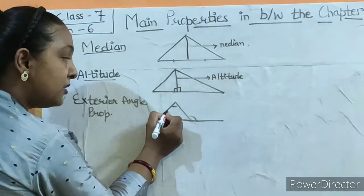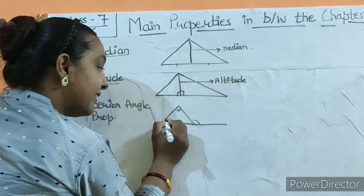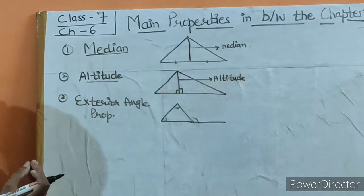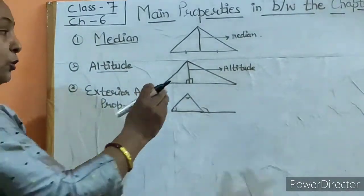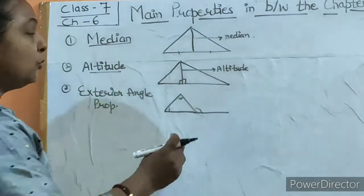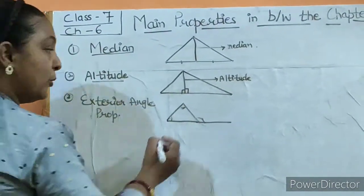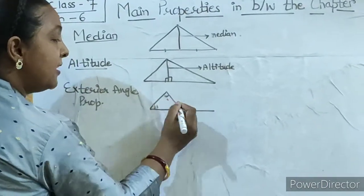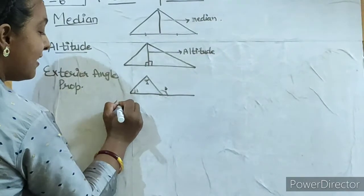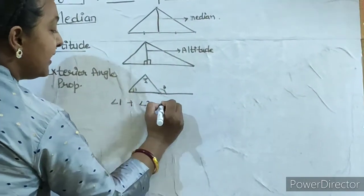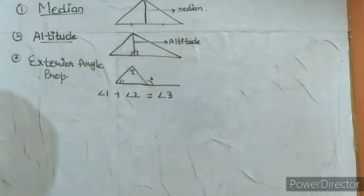The exterior angle is on the opposite side. On the opposite side there are two interior angles. If I take the sum and add the two interior angles, their sum equals the exterior angle. This is the exterior angle property.